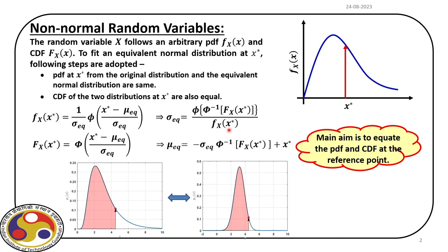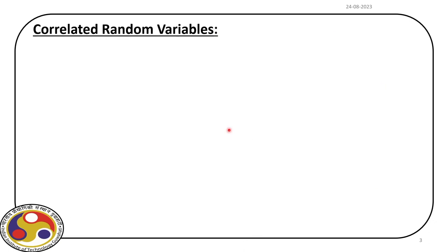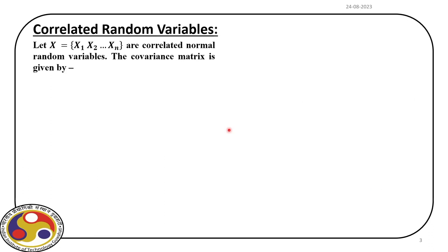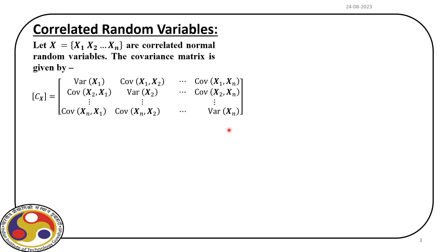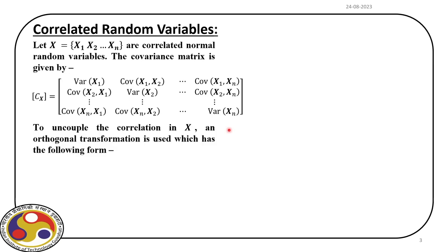In this transformation, we have only one random variable. In reliability problems, very often we deal with multiple random variables which are correlated. For correlated random variables, we developed an Eigenanalysis that decouples the system. If we have a set of random variables which are correlated, they are defined by their covariance matrix. Once we have this covariance matrix, we can perform an Eigenanalysis where we introduce a transformation.